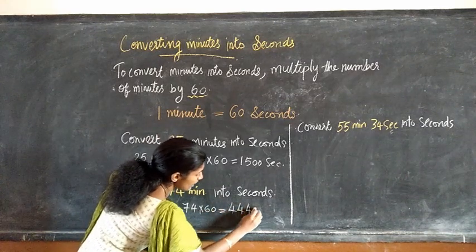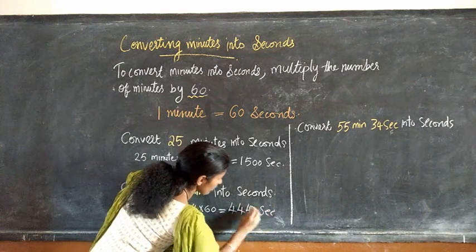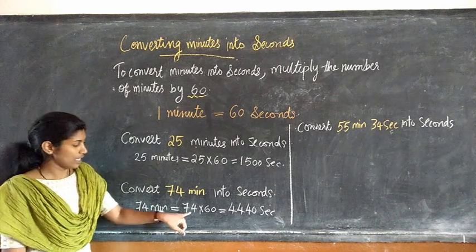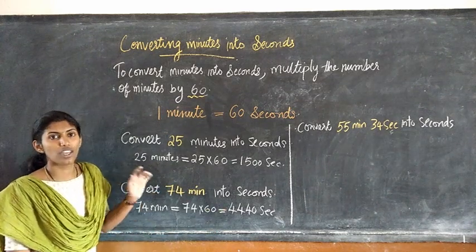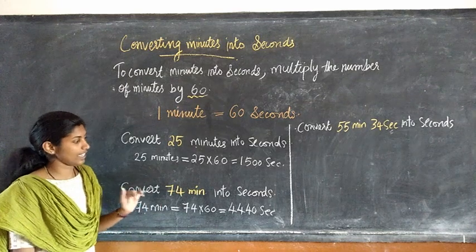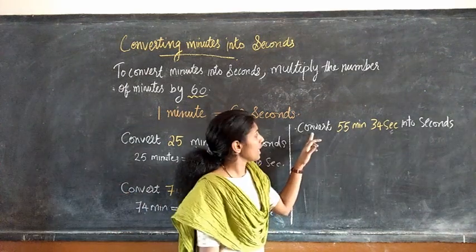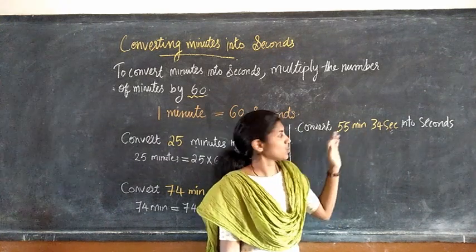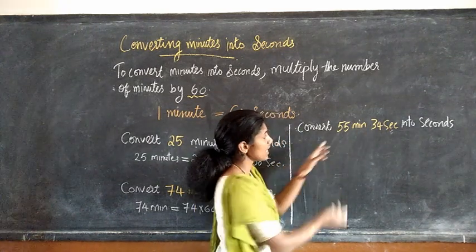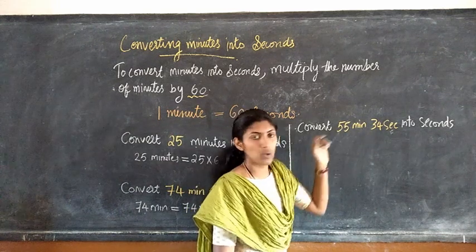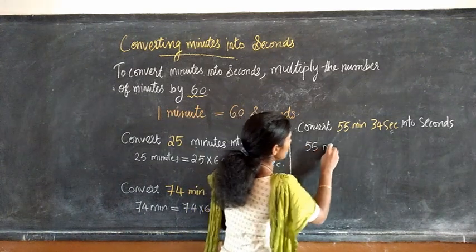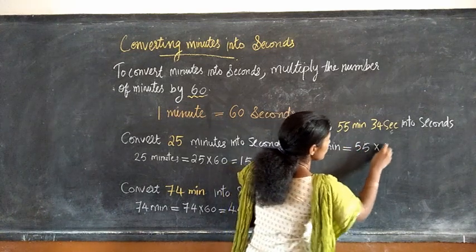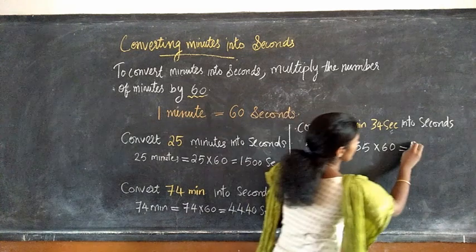So 25 minutes equal to 1500 seconds. Second question: convert 74 minutes into seconds. That is 74 minutes equal to 74 into 60, that is equal to 4440 seconds. Once again, 74 minutes equal to 74 into 60, that is equal to 4440 seconds.